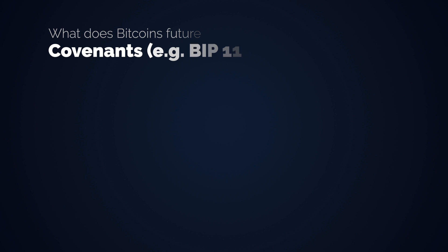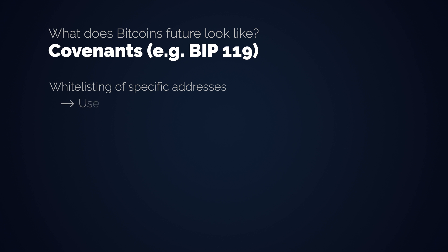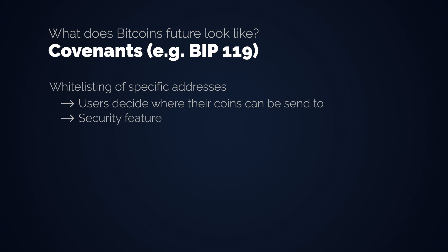Another proposed feature is Covenants, part of BIP119 and others. Covenants would enable whitelisting of addresses, so a user could restrict where his Bitcoin can be sent to, which can make a whole lot of sense from a security perspective.